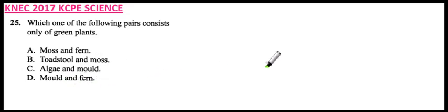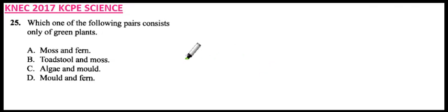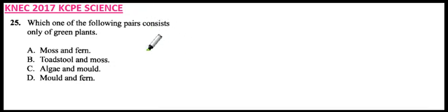The first question we should consider is: do you know these plants, and which ones are green? I'm going to show you these plants so you can see the ones which are green and the ones which are not green. Let's start with A, moss and fern. Let's see these plants.